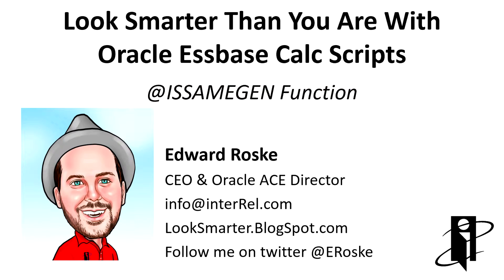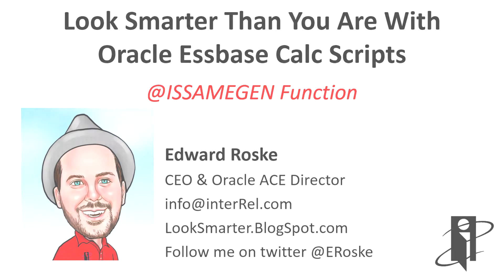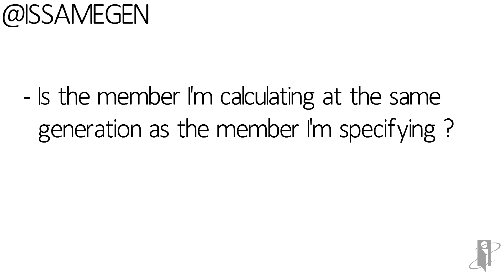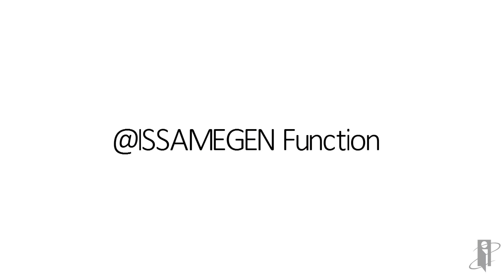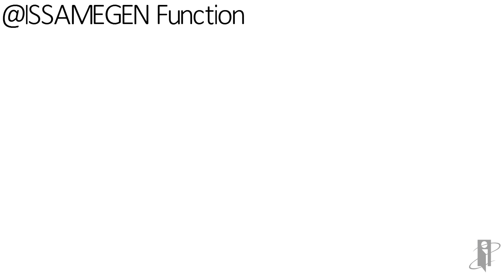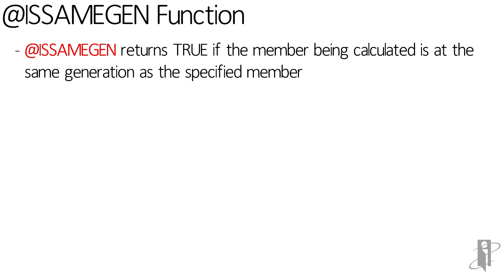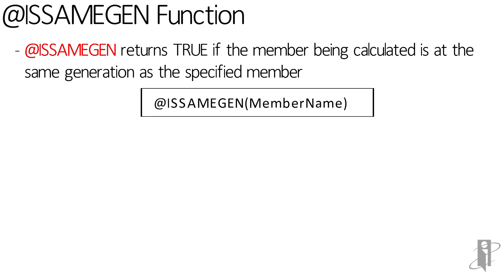Welcome to the isSameGen function. isSameGen is used to determine if the member currently being calculated is at the same generation as the member that you specify. So if you're trying to determine if the member being calculated is at the same generation as a member you specify, just use isSameGen and then give a member name.